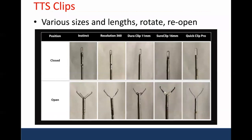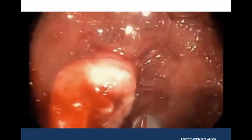Injection devices are also used in combination with mechanical devices. Here you can see a picture of many of the through-the-scope clips that are currently available. One thing I'll stress is that it's very important to know your device — all clips are of different sizes, they have different lengths, different jaw widths and tail lengths. They perform differently depending on scope position and where the bleed is located along the staple line. Some are able to rotate and reopen and some don't, so it's very important to know your instrument and think about where in the GI tract you are encountering the bleeding.